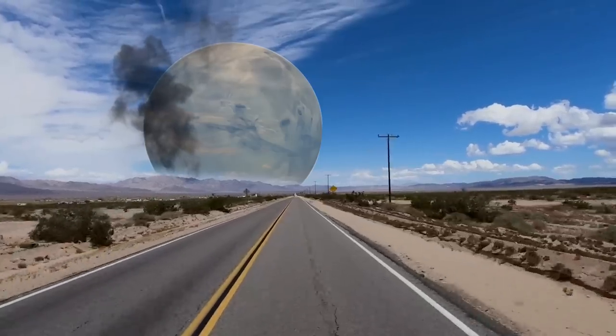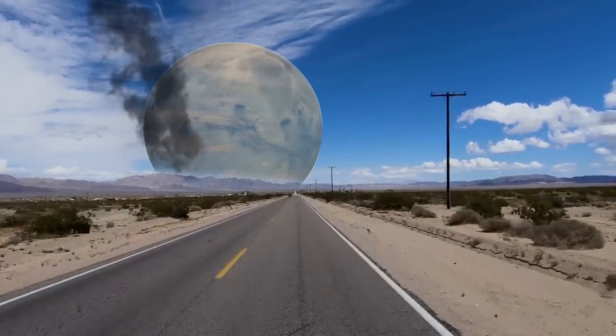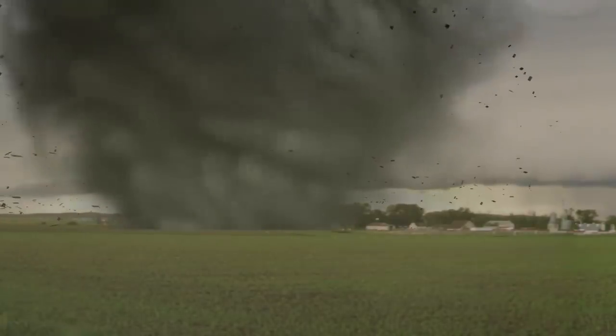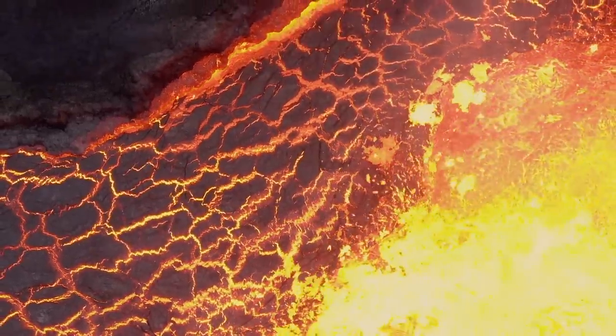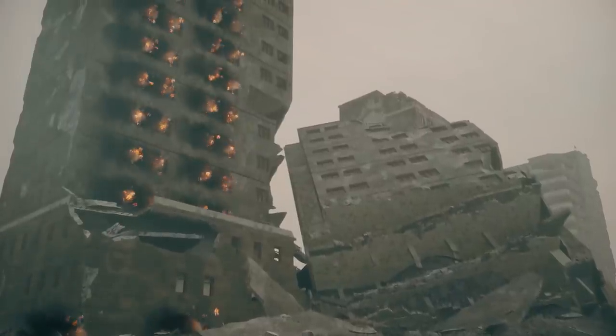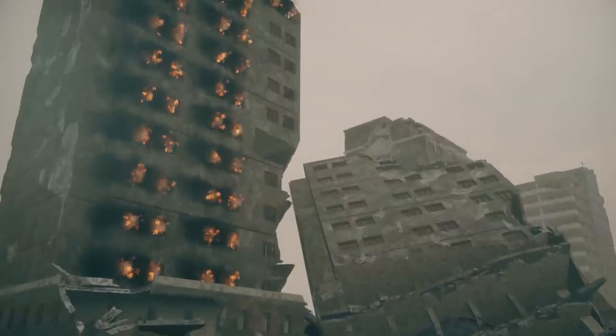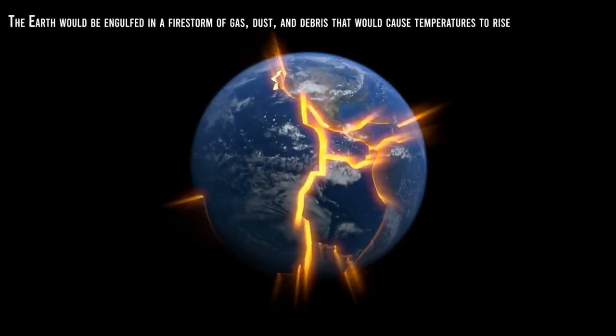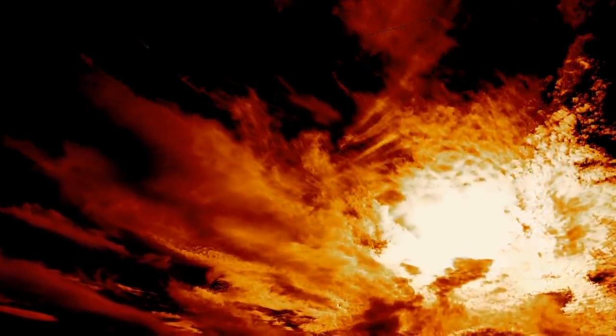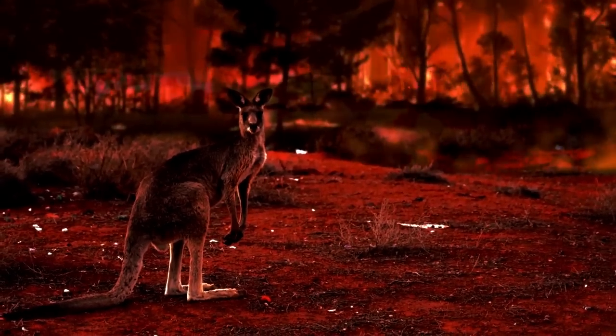If Mars hits the Earth, the consequences would be devastating. The impact would cause massive damage on an unprecedented scale. The force of the collision would be tremendous, creating massive earthquakes and tsunamis in all parts of the world, as well as volcanic activity. These disasters could cause a global catastrophe, as communities and cities are destroyed by violent volcanic eruptions, tsunamis and earthquakes. The Earth would be engulfed in a firestorm of gas, dust and debris that would cause temperatures to rise significantly, leading to a global climate shift and extreme weather patterns.